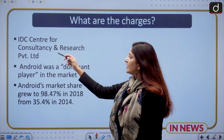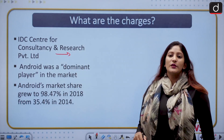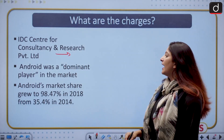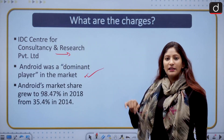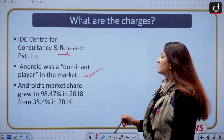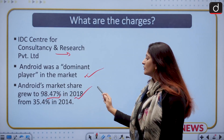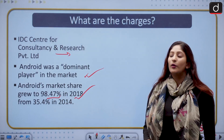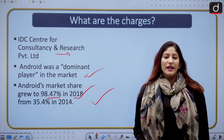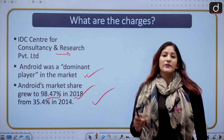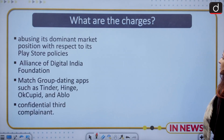Let us talk about the data on which CCI's findings were based. According to the IDP Centre for Consultancy and Research Private Limited, Android was the dominant player in the market. In India, Android's market share grew to 98.47 percent in 2020 from 35.4 percent in 2014. So we have data in which Google is the most dominant player.